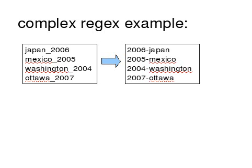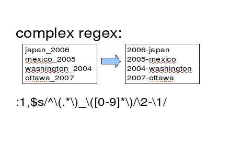Let's say I have a file with some location names and a year, and I want to revert that — put the year at the beginning, then a dash, and then the location name. One way to do it is with a regular expression which I will decipher for you.